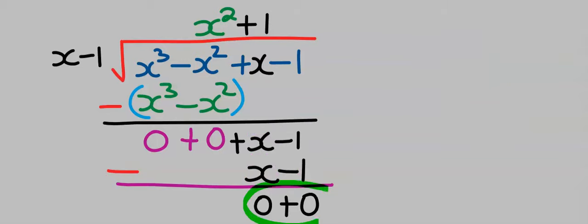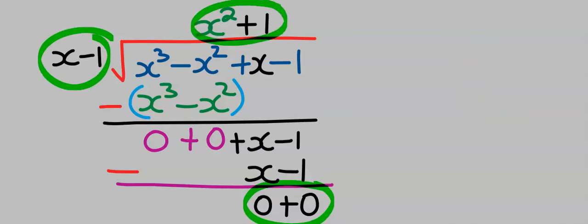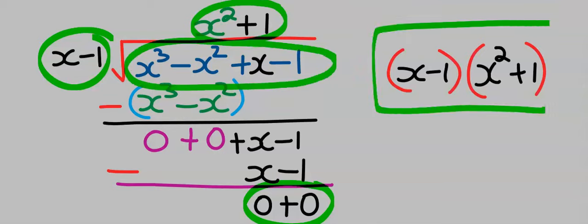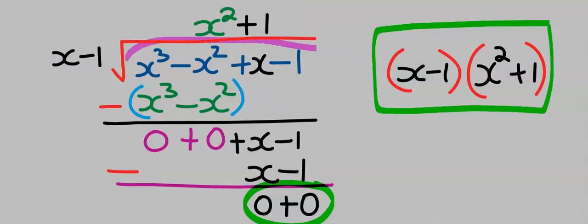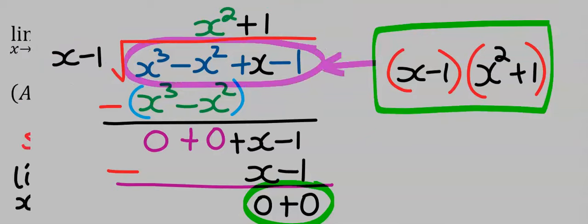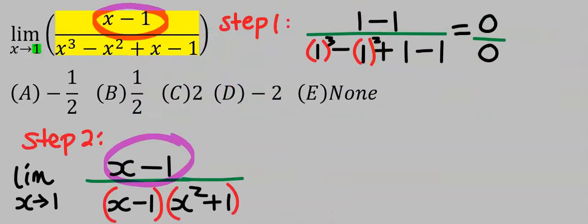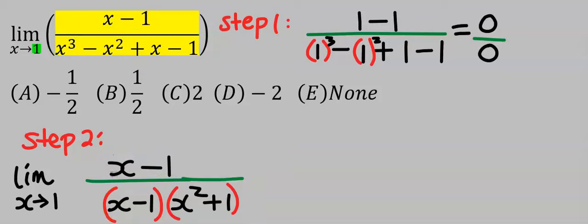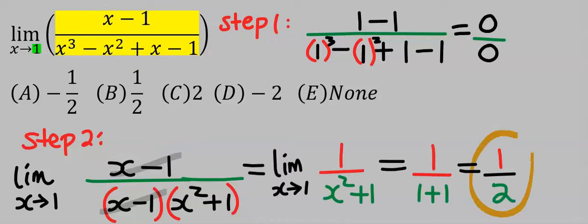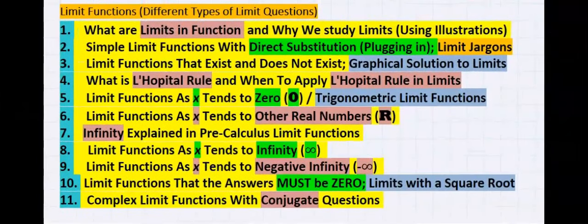Since there is no remainder, the factors become the answer to this polynomial. Our answer becomes (x − 1)(x² + 1). We use this to replace the polynomial at the denominator. (x − 1) at the numerator cancels (x − 1) at the denominator. Taking the limit, our answer is 1 over 2, which is option B.